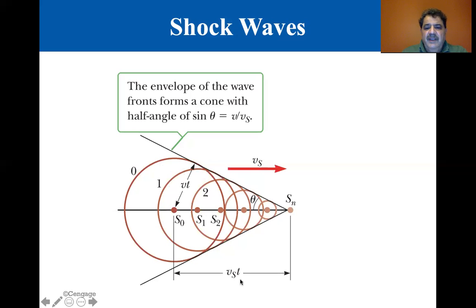And then V source times T is basically the hypotenuse of the triangle made up by VT, VST, and the side of the envelope. So sine of theta is equal to V divided by VS.